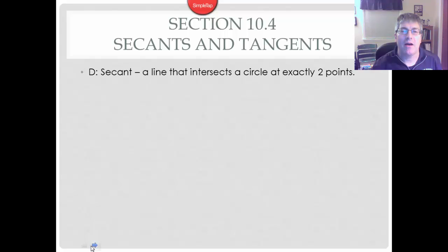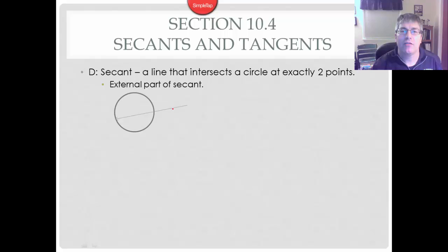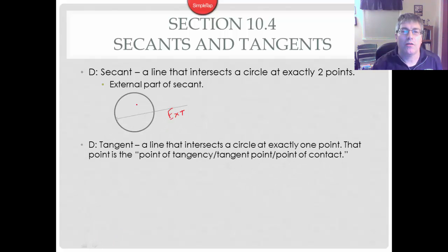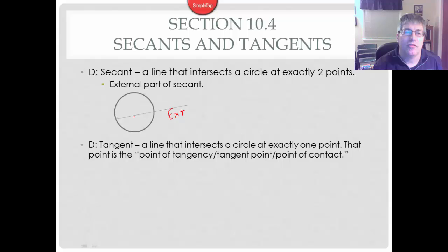A secant is a line that intersects a circle at exactly two points. The secant has an external part, which is the part outside of the circle, and an internal part, which is the part inside the circle. A secant can be a line, ray, or segment, but it cuts through the circle at exactly two points. It's a little different from a chord, because a chord is just from one side of the circle to the other and is totally inside the circle. So the internal part of the secant would be considered a chord.